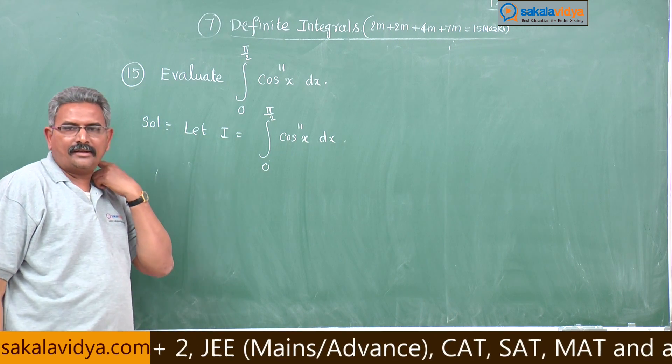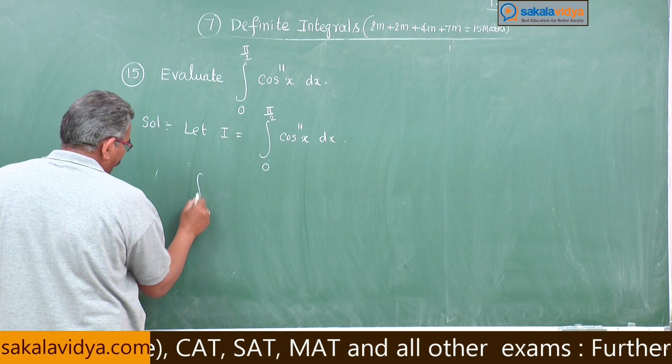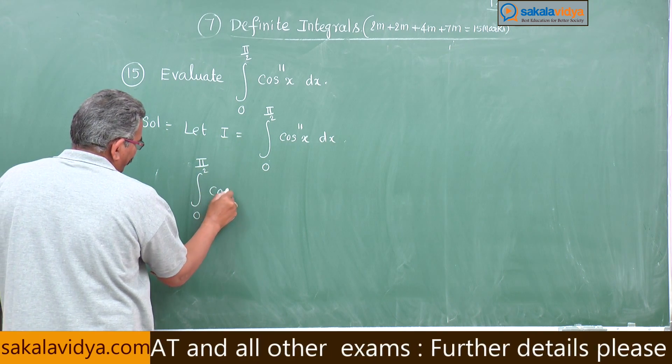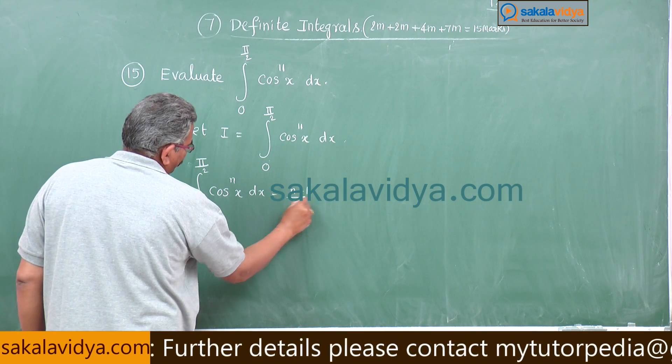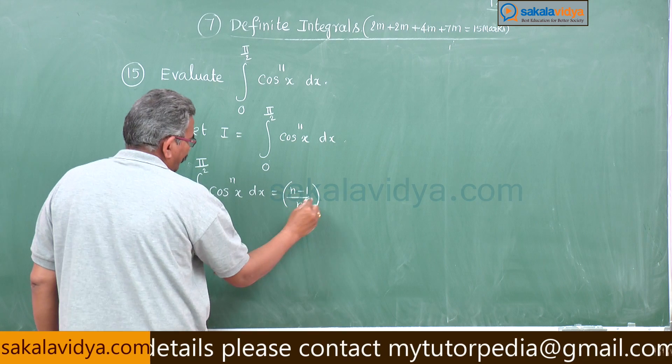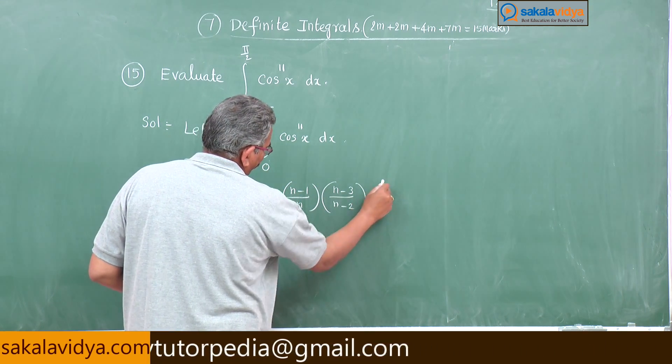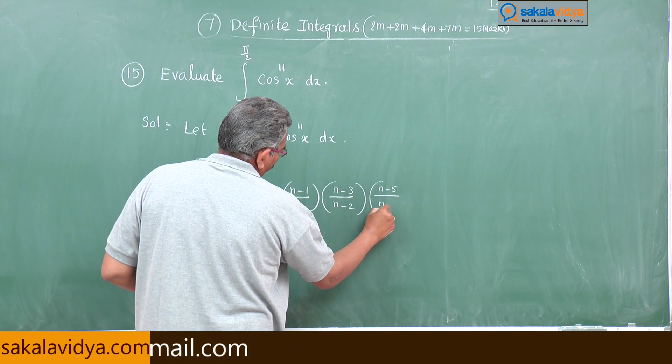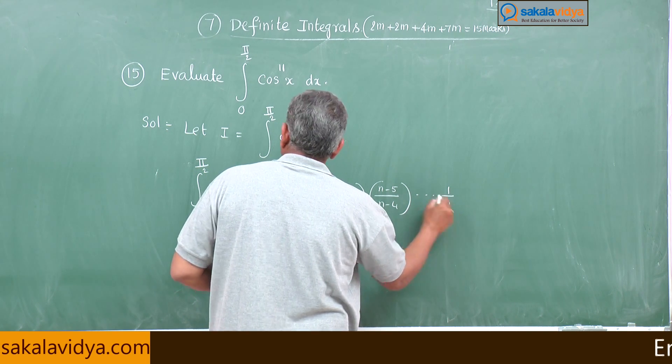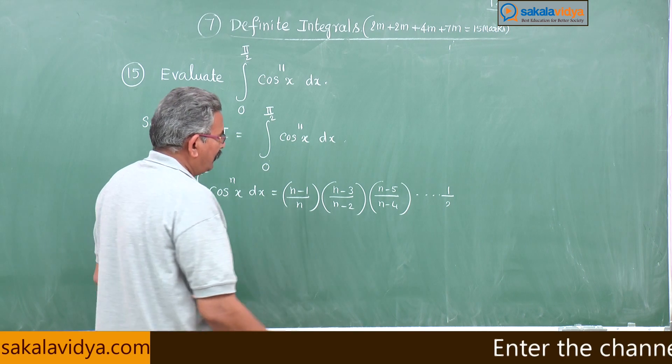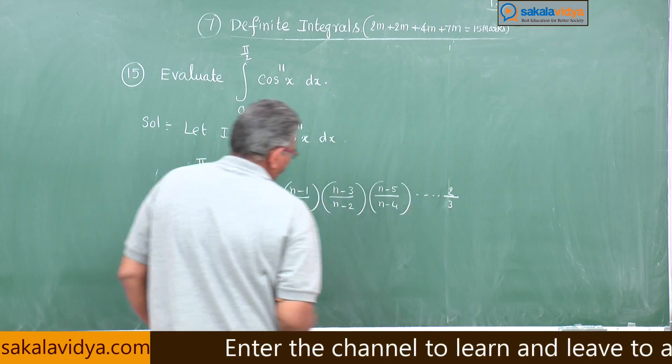Solution, let I equals integral 0 to pi by 2 cos x to the power of 11 dx. Let us recall Wallis formula. Integral 0 to pi by 2 cos x to the power of n dx equals n minus 1 by n, n minus 3 by n minus 2, n minus 5 by n minus 4.